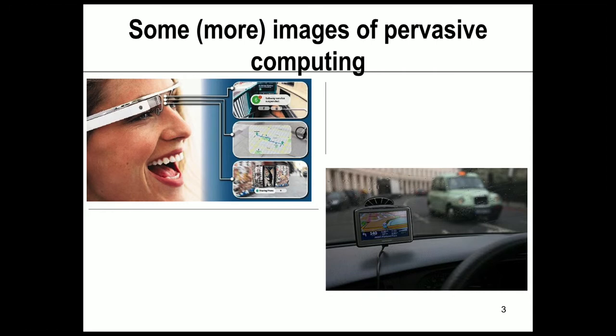At the bottom right, we've got a very familiar use of pervasive computing, which is SatNav. We all use SatNav now and wonder how we ever managed to navigate without it. SatNav is a good example of pervasive computing — it links devices together, linking the device in your car to GPS satellites and databases that are constantly being updated, allowing us to navigate in much more efficient ways than we used to. It's pervasive because it's always on, always available, it's in the environment, it goes with us and helps us live our lives and do everyday activities in new ways.